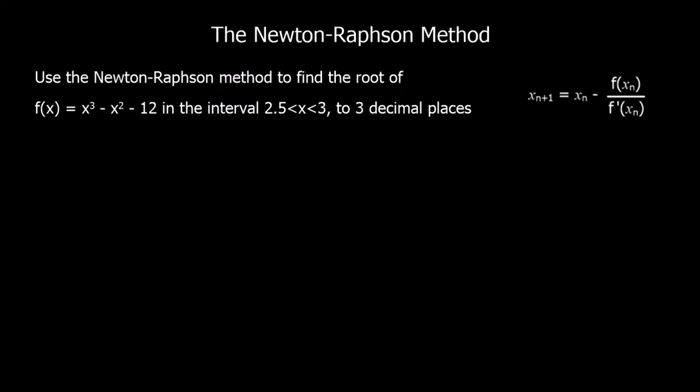Another question. Use the Newton-Raphson method to find the root of f(x) = x³ - x² - 12 in the interval between 2.5 and 3 to 3 decimal places. We've got f(x). We need the derivative, f'(x).